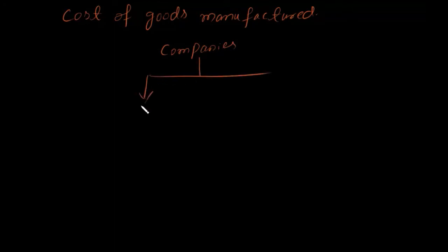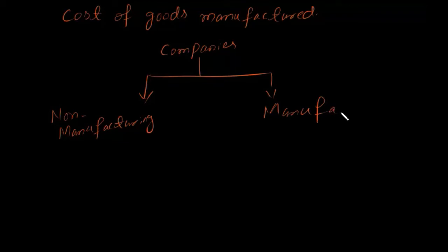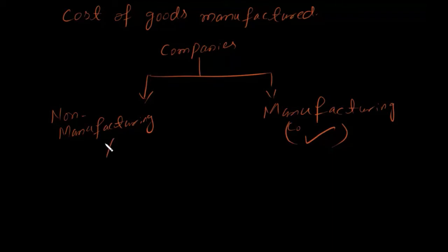Before I explain this concept of Cost of Goods Manufactured, you must know a few things. There are two types of companies: Non-Manufacturing Companies and Manufacturing Companies. The Cost of Goods Manufactured is calculated only by Manufacturing Companies — Non-Manufacturing Companies do not calculate it.